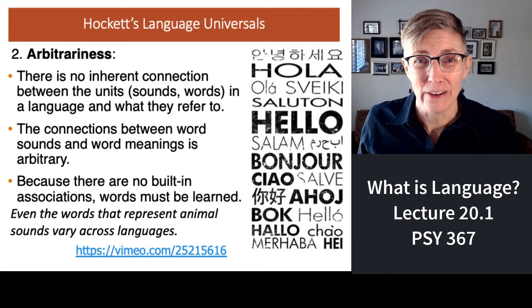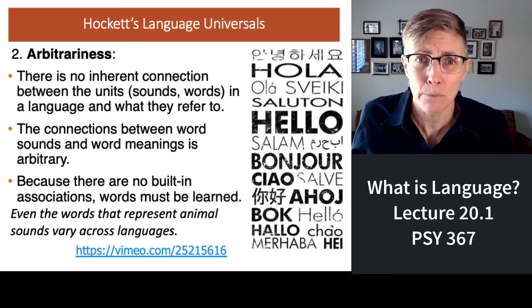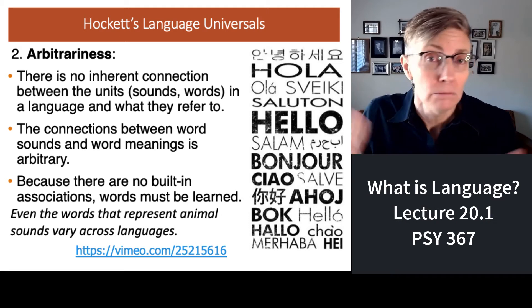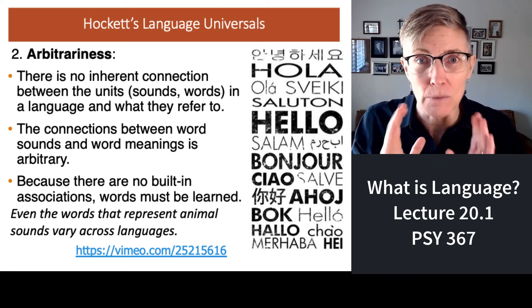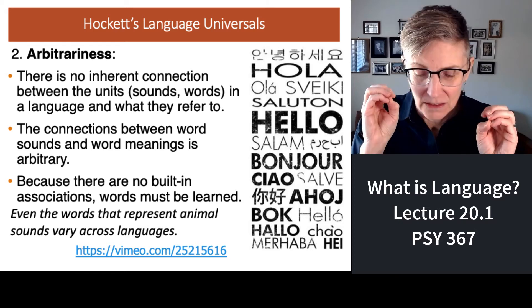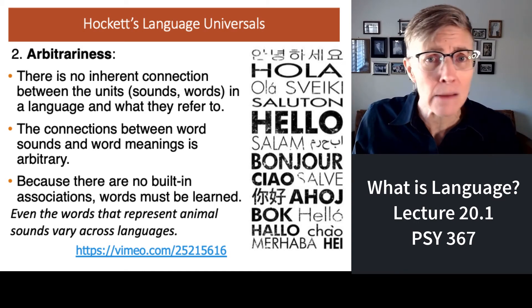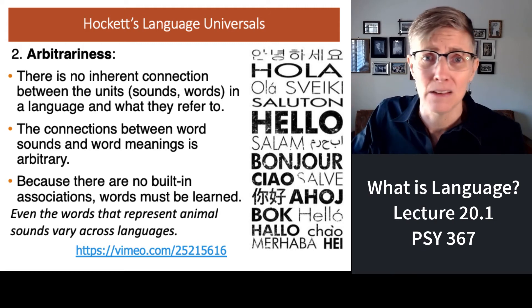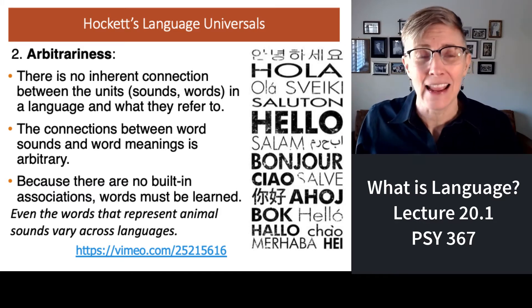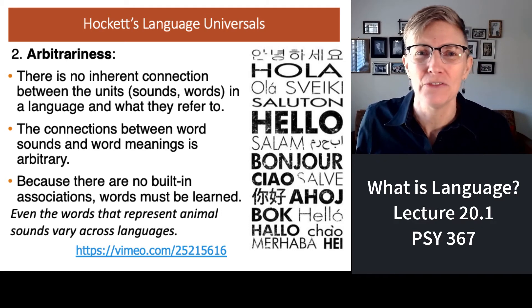Words are arbitrary. There's no reason we call an apple an apple. As long as we agree on something, we could call an apple 'pfft' — and as long as everybody agreed that 'pfft' meant apple, it's perfectly good. You might think that animal sounds would have to have certain words associated with them, because the sound a pig makes in LA is the same as in Paris or Taipei — pigs and chickens and dogs and cats make the same sounds all over the world. Or do they? Many people think this video is the funnest point of the whole class. Enjoy.